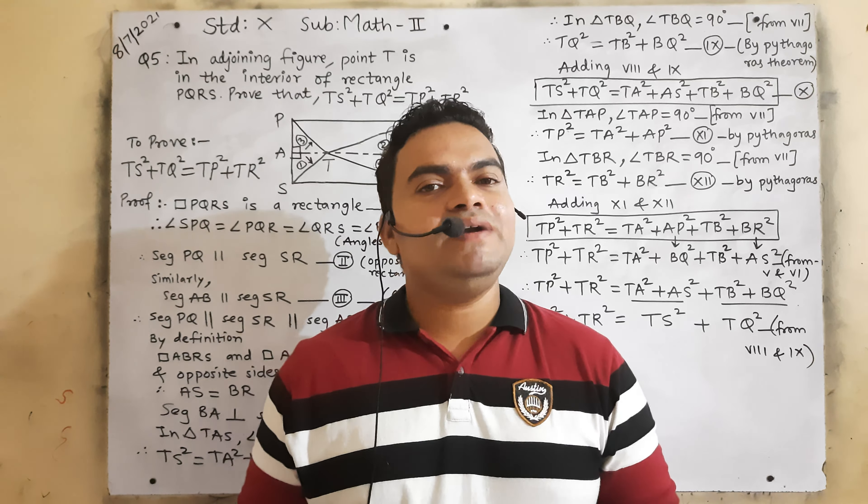What is to be proved: TS². First we will write what is to be proved, then the proof. Quadrilateral PQRS is a rectangle — it is given. Therefore all angles of the rectangle are 90°: angle SPQ = 90°, angle PQR = 90°, angle QRS = 90°, angle RSP = 90°. This is because of the property — angles of a rectangle. Now, segment PQ is parallel to segment SR because it is a rectangle and opposite sides are parallel to each other.